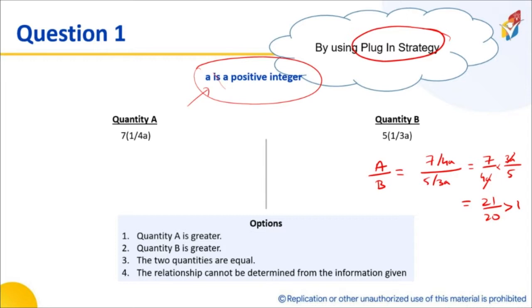Then I cannot use a division method. That is when you will use a plug-in strategy. Because here a is a positive integer, division gave you an answer. Just look at the division method and you'd realize that I got lucky, but I might not get lucky all the time.